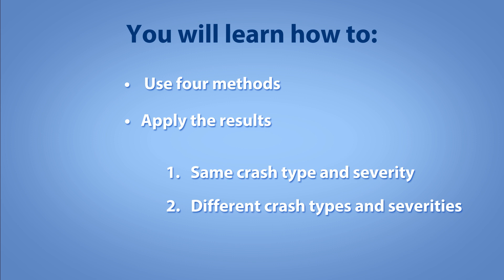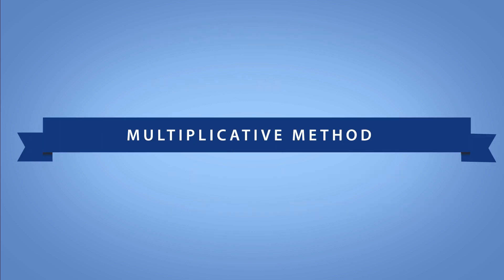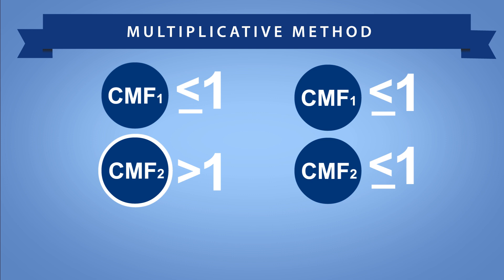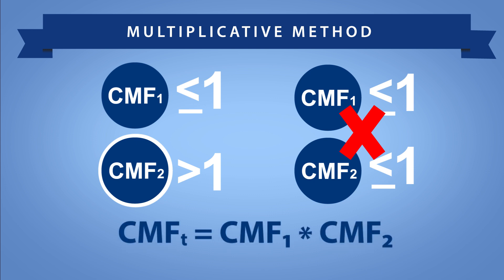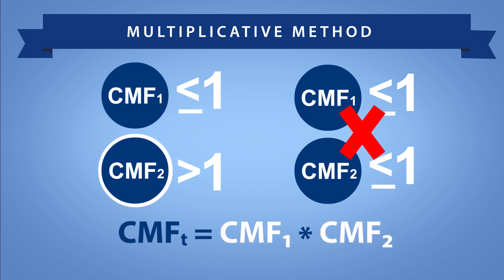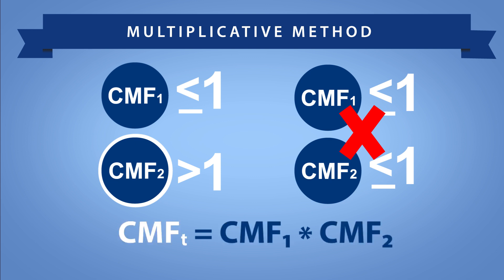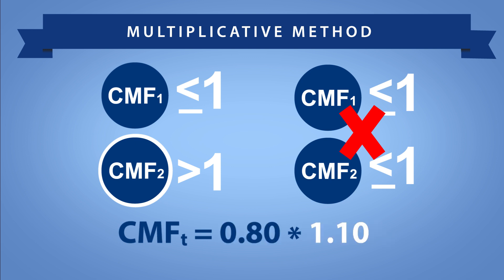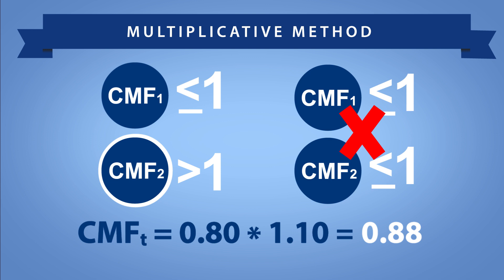You may complete this video from start to finish, or skip directly to the method or application of interest. The multiplicative method is appropriate for scenarios where one or more CMFs are greater than 1. If both CMFs are less than or equal to 1, then one of the other methods is more appropriate. Using the multiplicative method, you simply multiply the two CMFs, where CMF1 and CMF2 are the applicable CMFs for the individual countermeasures, and CMFt represents the combined effect. For example, if CMF1 is 0.80 and CMF2 is 1.10, then CMFt is 0.88.